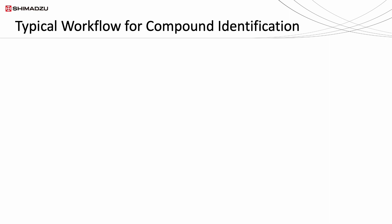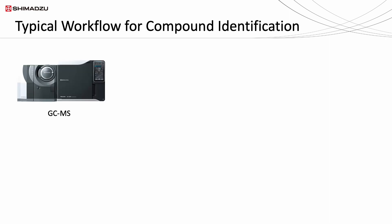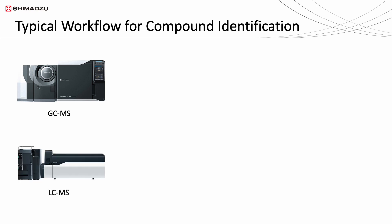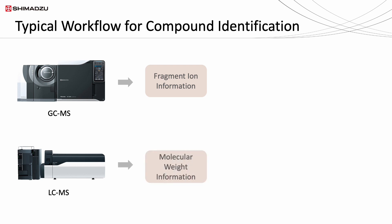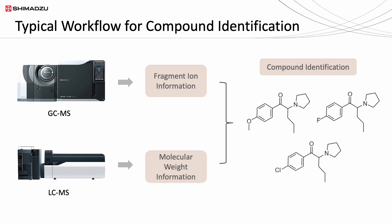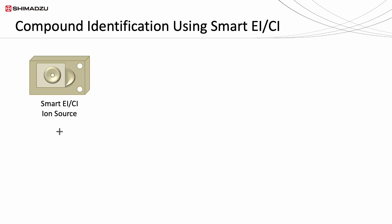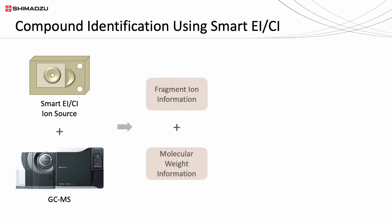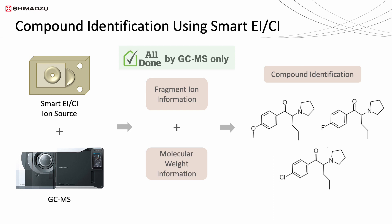Typically, to identify these compounds, a combination of gas chromatography mass spectrometry (GCMS) and liquid chromatography mass spectrometry (LCMS) are used. GCMS analysis provides the fragmentation information, while LCMS analysis provides the molecular weight information. By combining the results from both instruments, effective information for compound identification can be obtained. In contrast, with smart IS installed in the GCMS system, both fragment ion information and molecular weight information can be obtained by using GCMS only. Therefore, the workflow for compound identification can be facilitated.